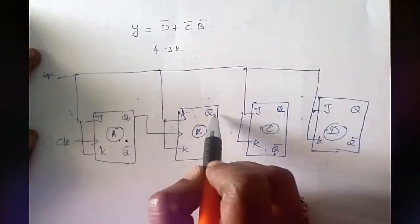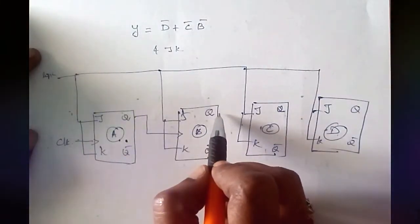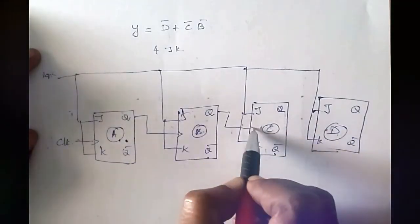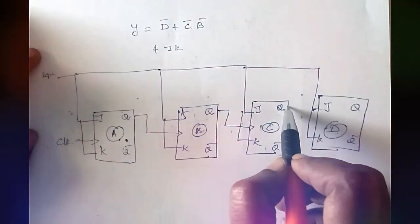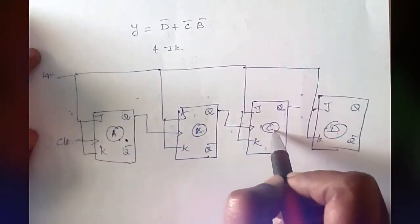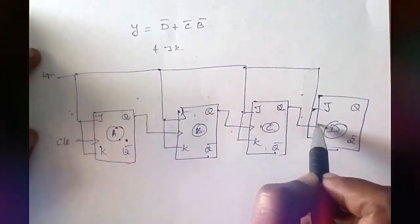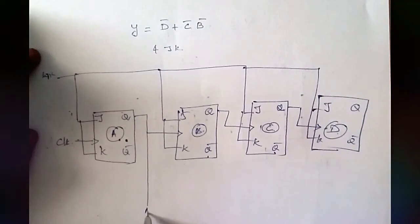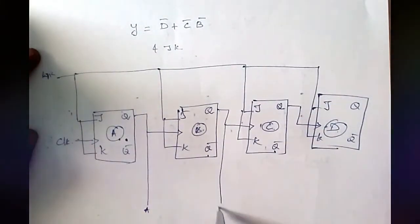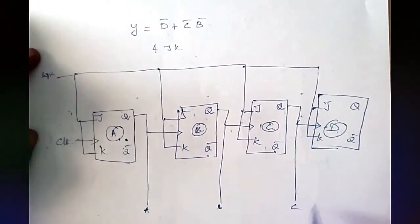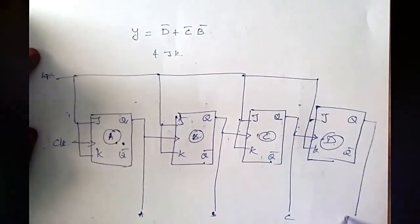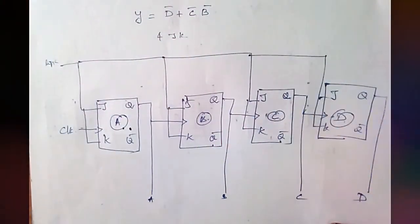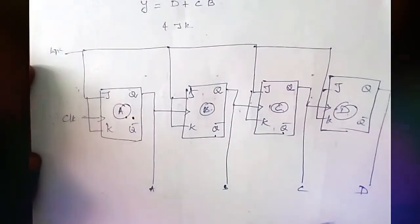The Q output of flip-flop A will be the clock pulse to flip-flop B. The output Q of flip-flop B will be the clock pulse for flip-flop C, and the output Q of C will be the clock pulse for flip-flop D. A is the LSB, followed by B, C, and D as the MSB.